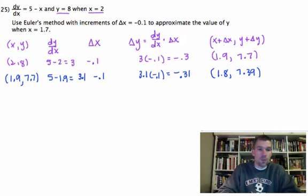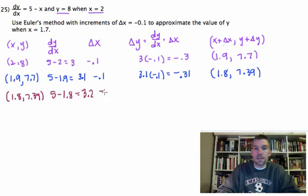And then I go on to my last row here. So I've got 1.8 and 7.39. And I do dy/dx, which is going to be 5 minus the x coordinate, 5 minus 1.8, which is 3.2. Delta x is negative 0.1. So what is delta y? It's 3.2 times negative 0.1, which is negative 0.32.